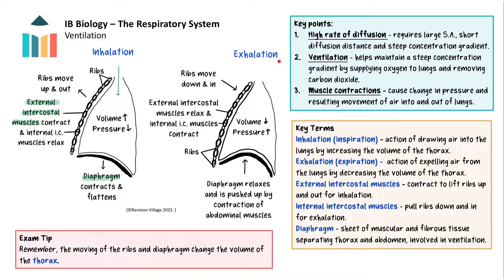During exhalation, the external intercostal muscles relax and the internal intercostal muscles contract, pulling the ribs down and in. At the same time the diaphragm domes upwards as it relaxes and is pushed up by the contracting abdominal muscles. The dropping of the ribs and doming of the diaphragm decreases the volume inside the thorax and the lungs, so pressure increases and air carrying a higher concentration of carbon dioxide rushes out as the mouth opens.